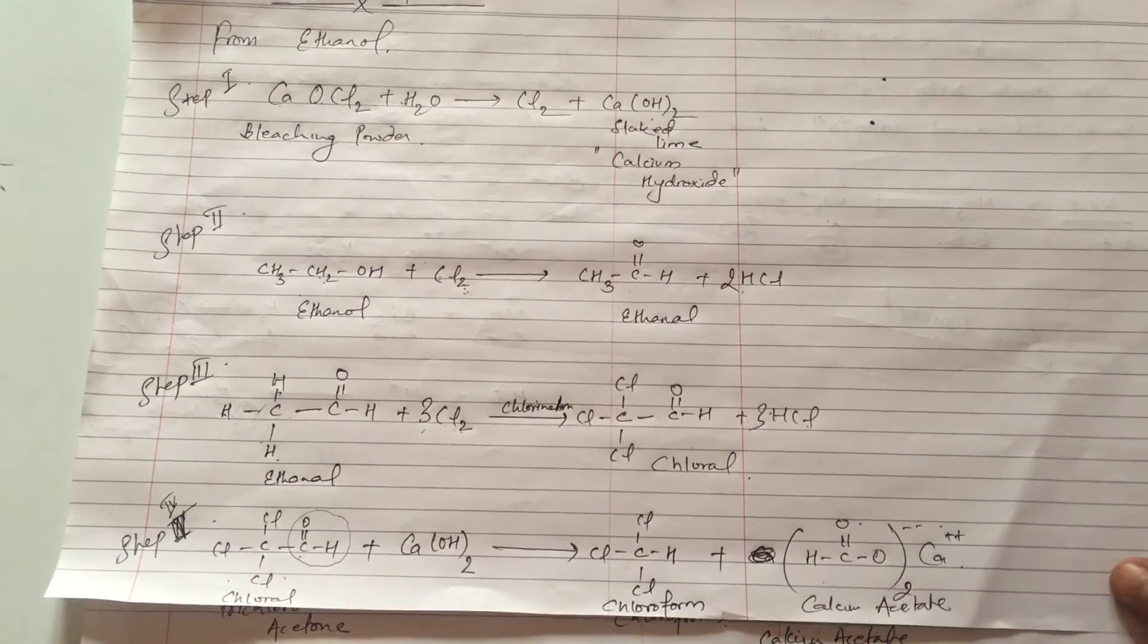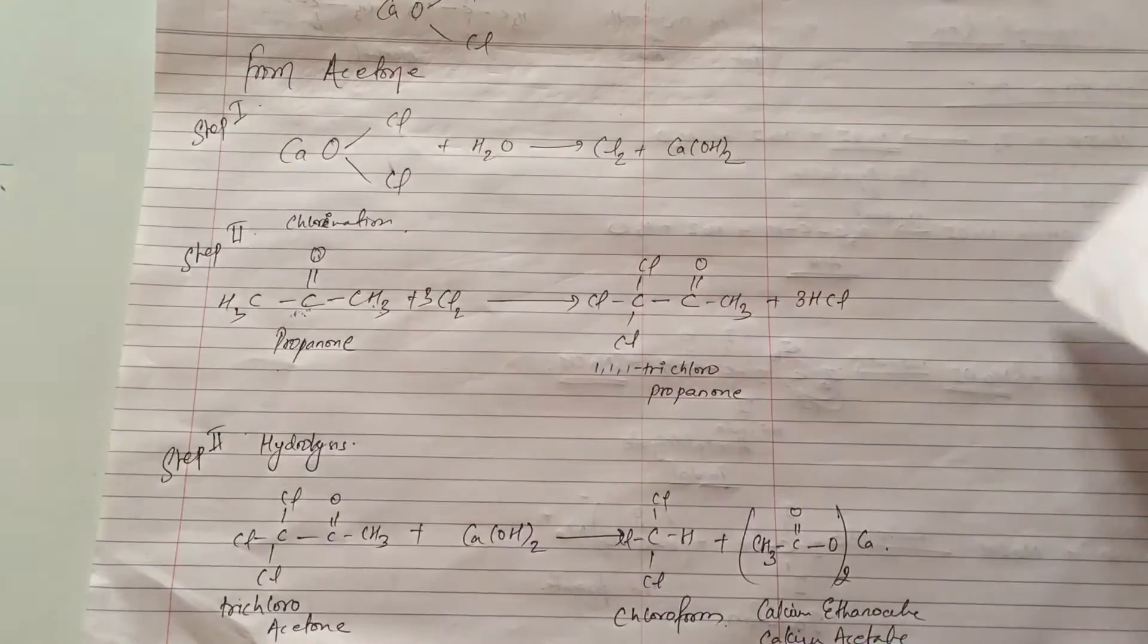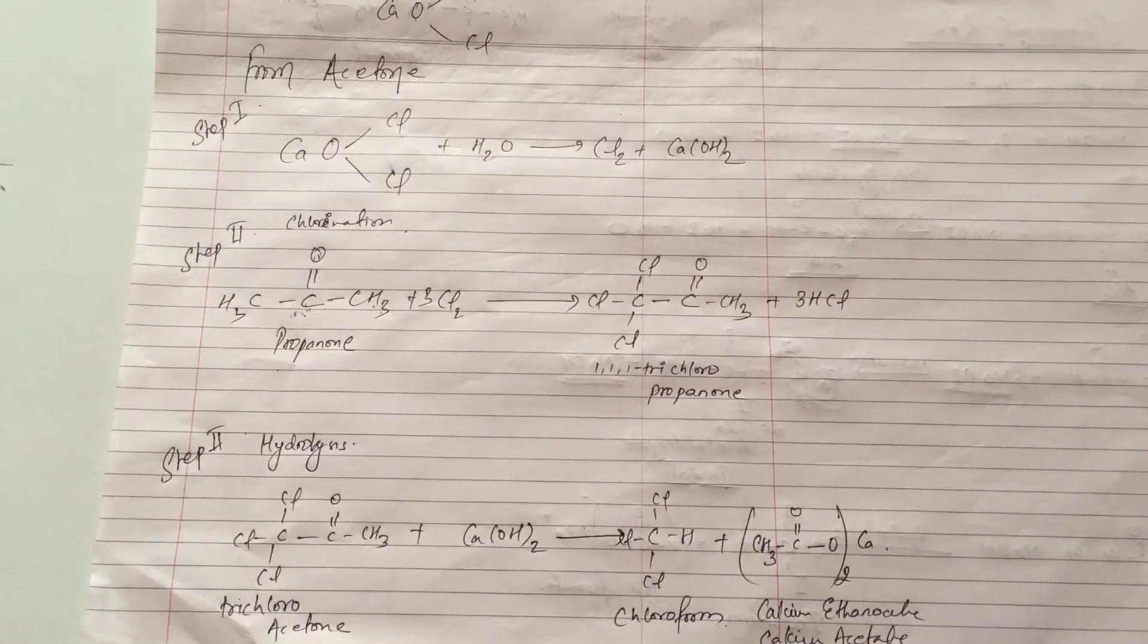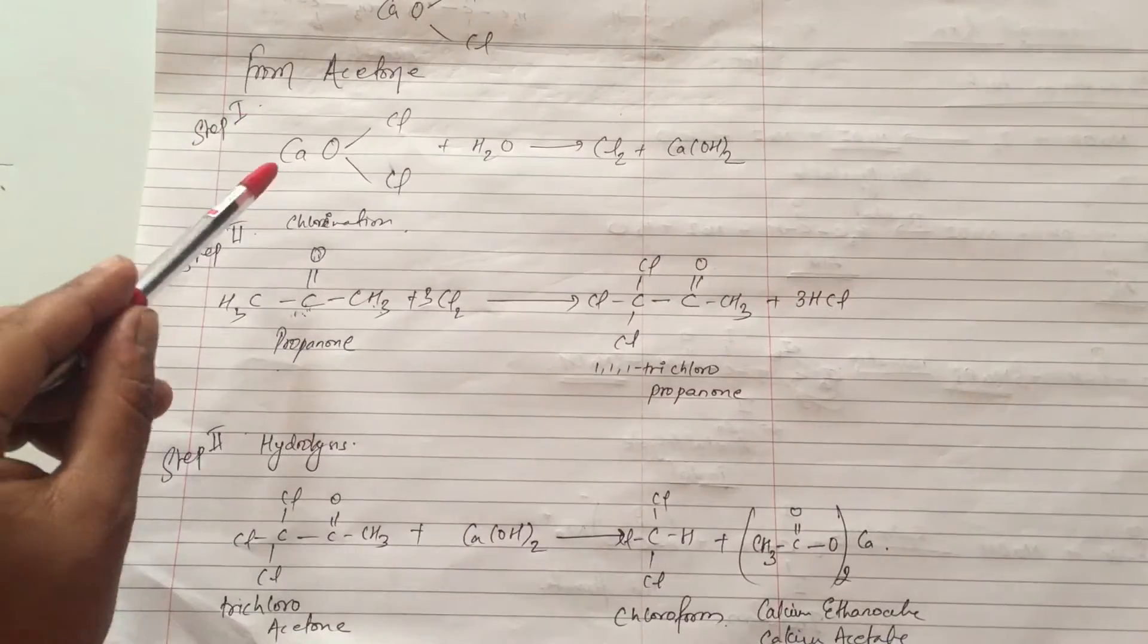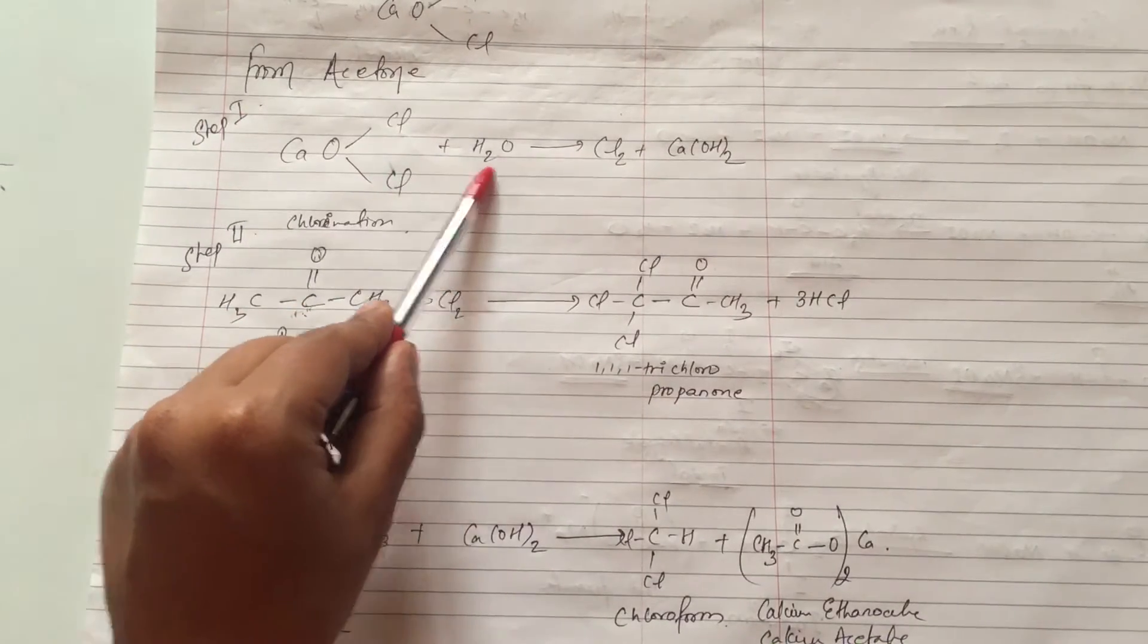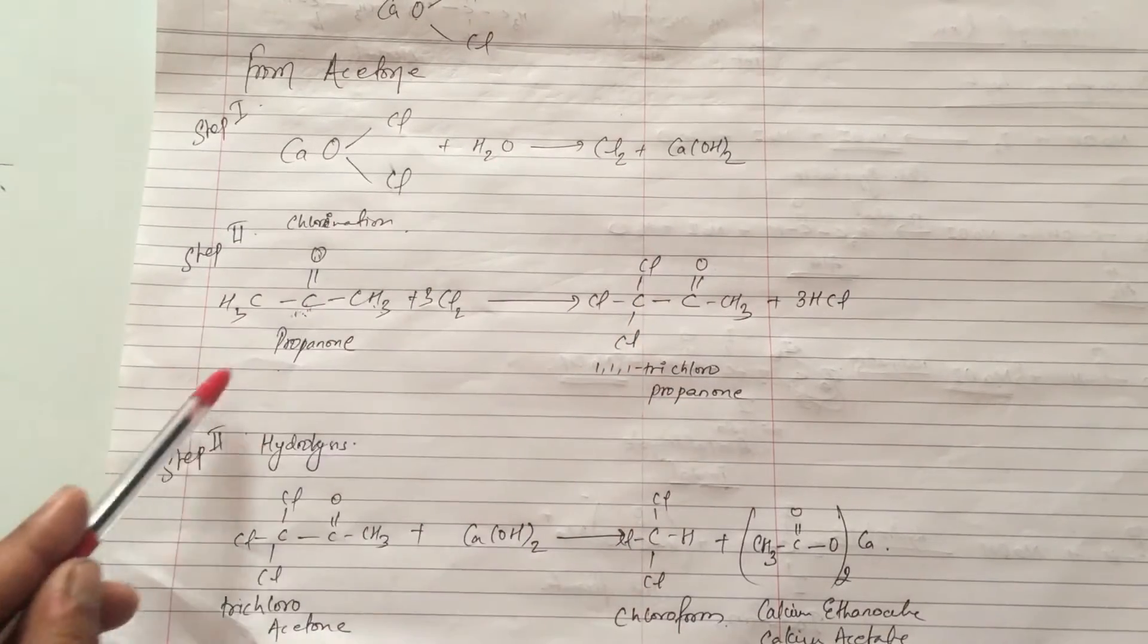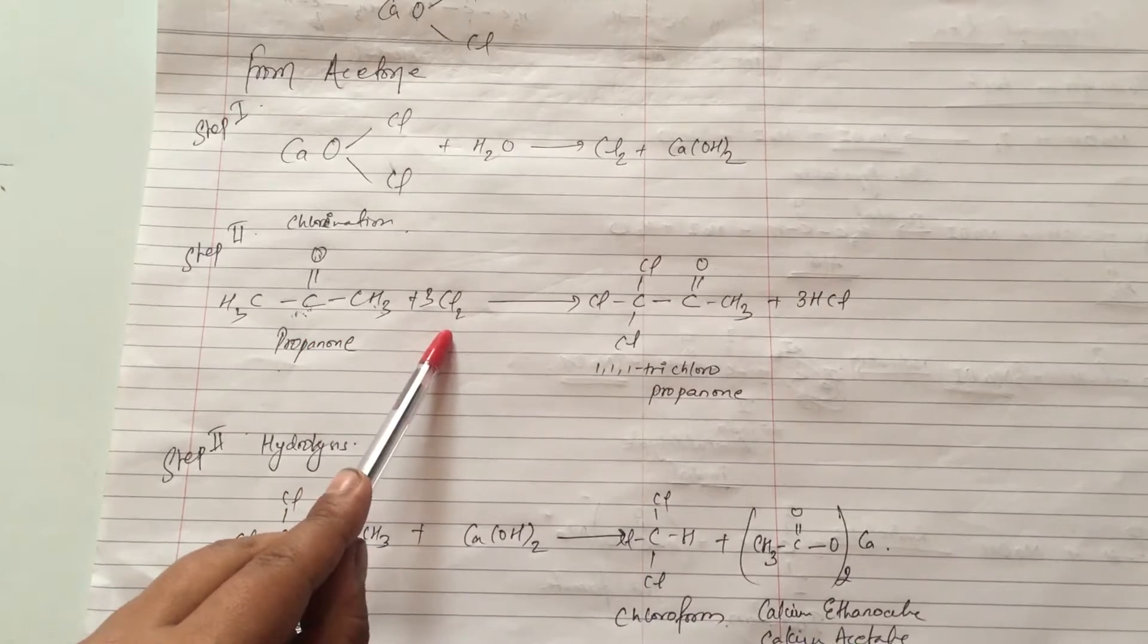So now without wasting time we're going to see another process, another steps for how to prepare chloroform from acetone also. Acetone when you get a ketone group, we keep water. Water is also the formation of chlorine and slaked lime. So again propanone, propanone is the reaction of chlorine.